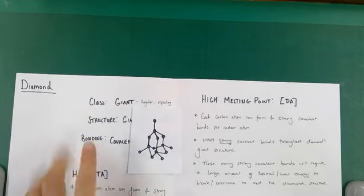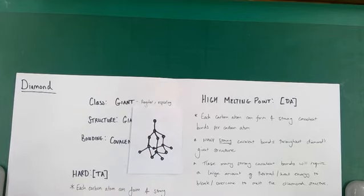Each carbon atom in diamond forms four strong covalent bonds. This means that throughout the diamond structure, there are many millions of strong covalent bonds throughout that giant structure. It takes a lot of thermal energy to overcome or break those strong covalent bonds throughout the diamond structure, which is why it has such a high melting point.